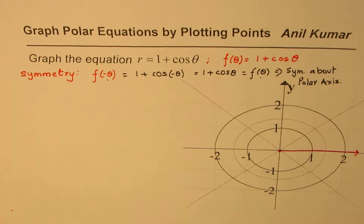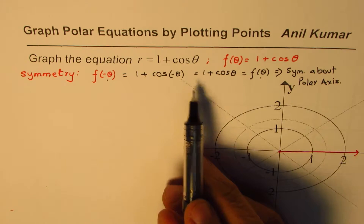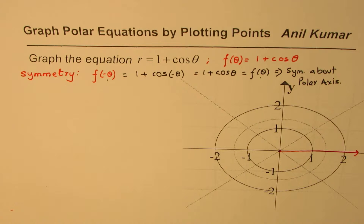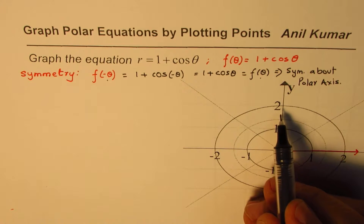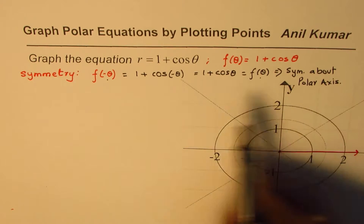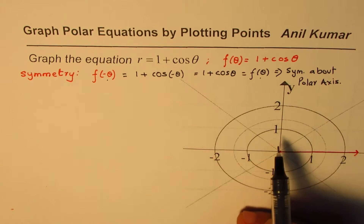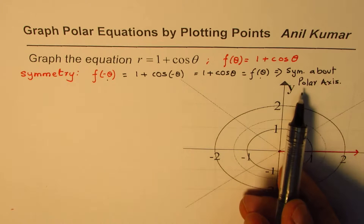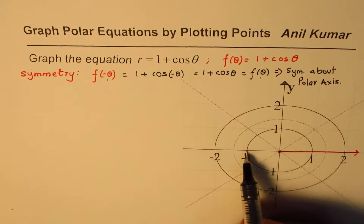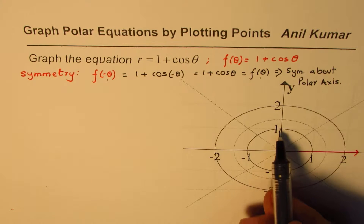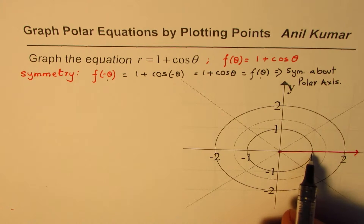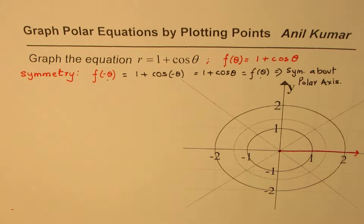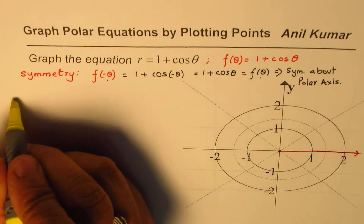So it is symmetric about the polar axis. You would also try the other symmetries — whether it is symmetric about the y-axis or about the pole. You'll find that it is not symmetric about the y-axis, so this is the only symmetry this function has. Since we know it is symmetric about the polar axis, all the points on the upper half can be reflected, so we only need values of theta between 0 and pi.